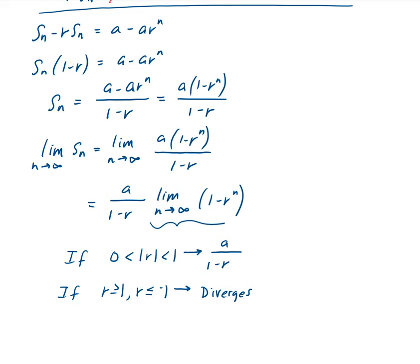So we've proved this result. The series is going to converge if the absolute value of R — the ratio — is between 0 and 1, and we get convergence to A over 1 minus R. That is the proof.